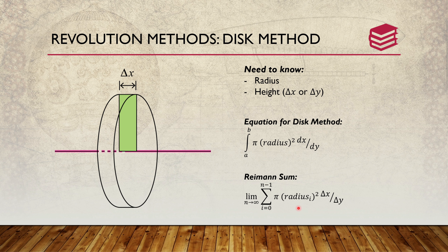Your Riemann sum would be π r², and you would set it up with the limit as well. Depending on the axis — left to right — it could be delta x or delta y.